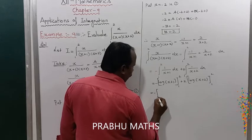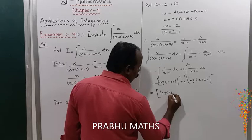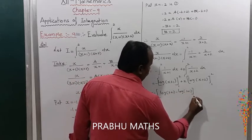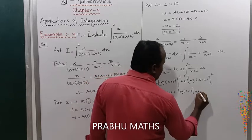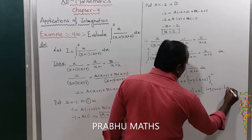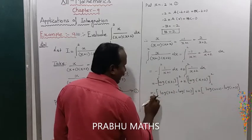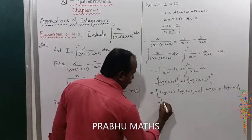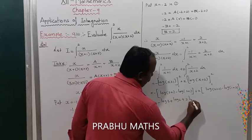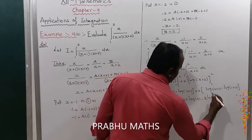Substituting the upper and lower limits: equals -[log(2+1) - log(1+1)] + 2[log(2+2) - log(1+2)]. This simplifies to -[log 3 - log 2] + 2[log 4 - log 3], which equals -log 3 + log 2 + 2·log 4 - 2·log 3.